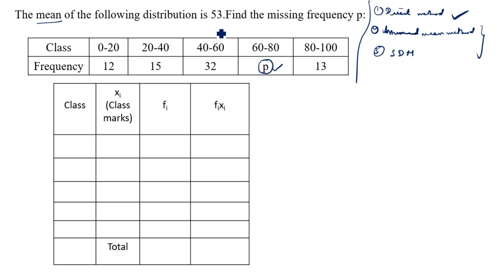In your exam, if they give the assumed mean method to find the missing frequency, you will take the assumed mean method formula and do the problem — otherwise your answer is wrong. Carefully check in your question what method they asked in your exam, and based on that you solve the problem.